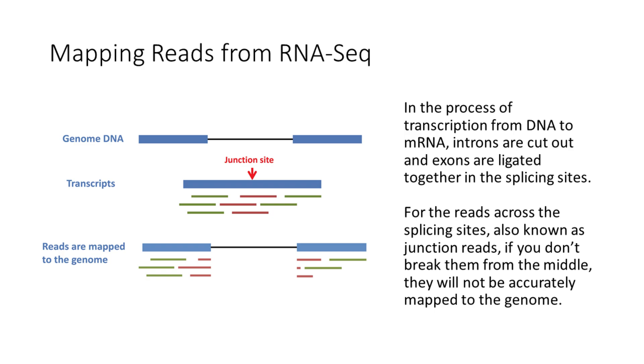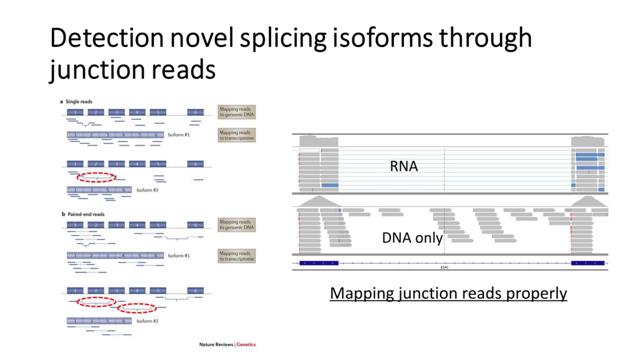These junction reads are the direct evidence to determine the splicing sites. They are crucial for proper reconstruction of the transcript structure. For example, in this figure, the junction reads across exon 1 and exon 3 directly support the existence of the transcript with exon 1 and exon 3 ligated directly without exon 2 included. Similarly, in the figure below, the two kinds of junction reads respectively support the existence of transcripts with exon 1 and exon 3 directly ligated, and the transcript with exon 3 and exon 5 directly ligated.